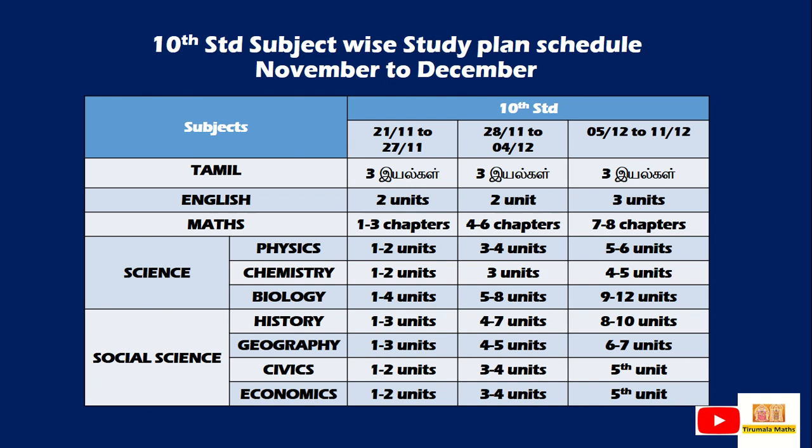Biology: units 1-4 are the first slot, units 5-8 are the second slot, and units 9-12 are the third slot. Social Science History: units 1-3 are first slot, 4-7 are second slot, and 8-10 are the third slot. Geography: 1-3 first slot, 4-5 second slot, 6-7 third slot. Civics units go into the third slot. Economics: unit 1 is the first slot, units 2-3-4 are the second slot, and unit 5 is the final slot.